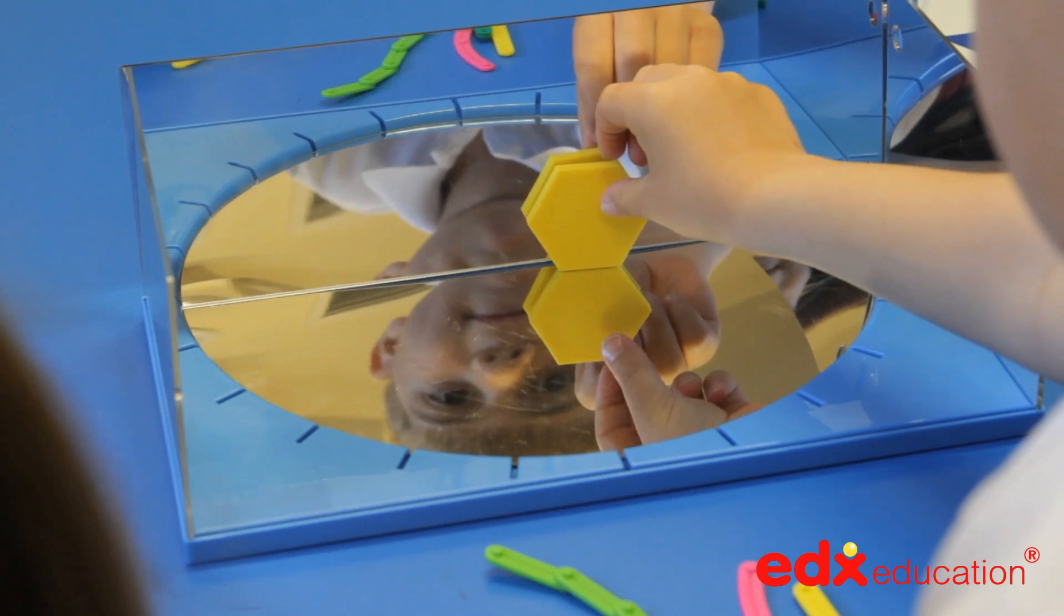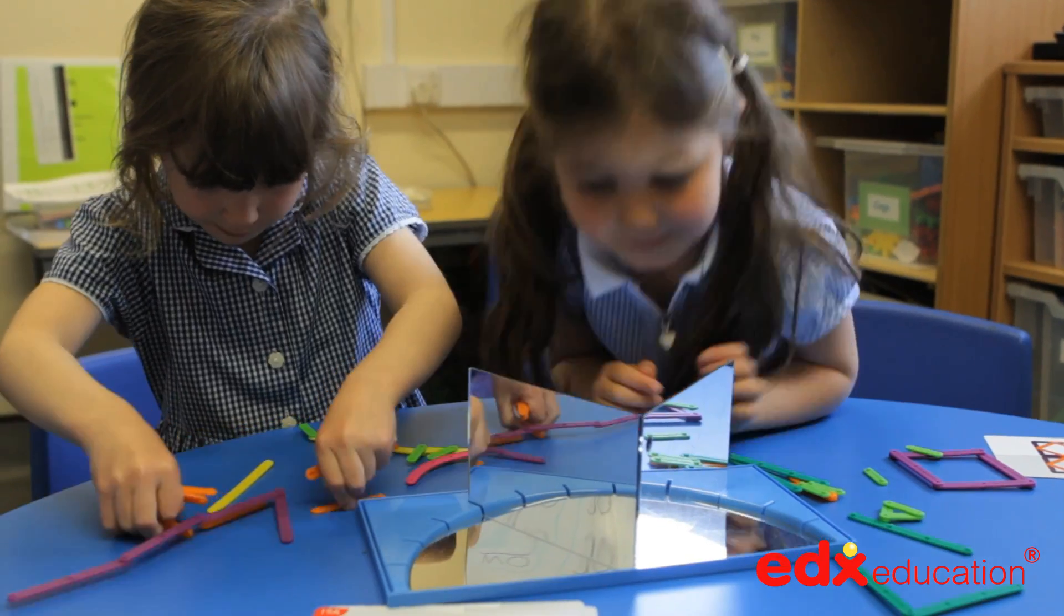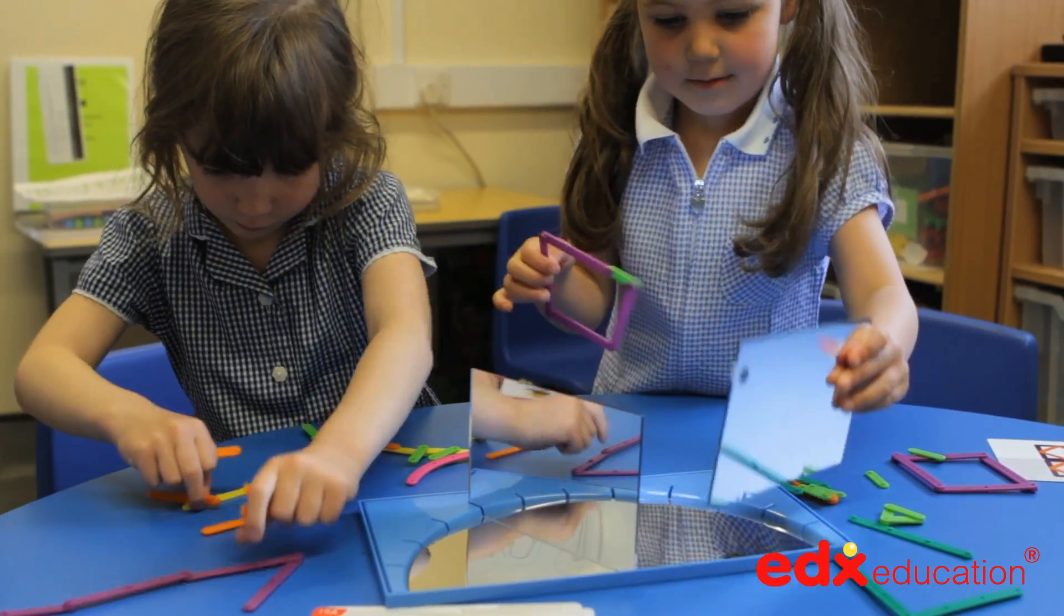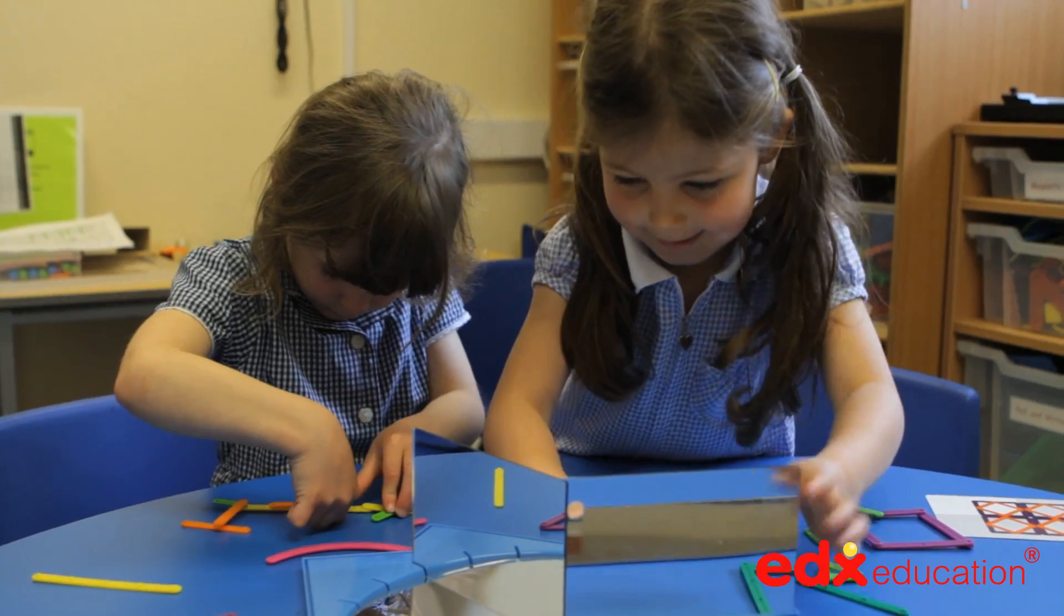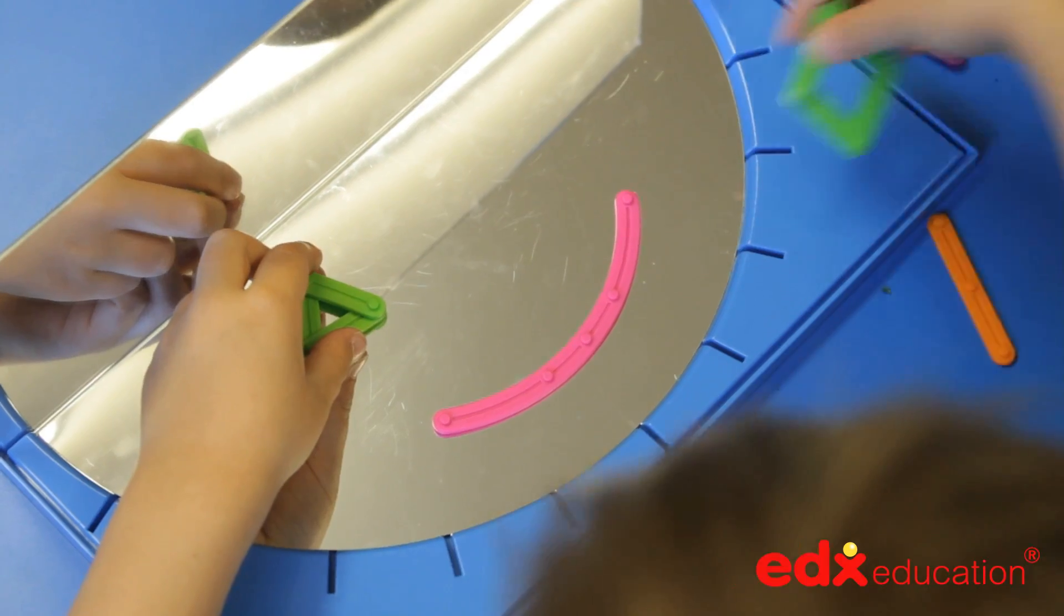The Junior Geoland set consists of four mirrors and a plastic base so that children can explore reflection and symmetry. But before they begin, they will want to experiment with the components to see themselves and objects reflected at different angles and in different directions.